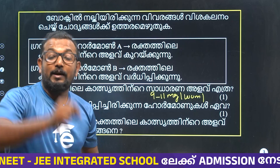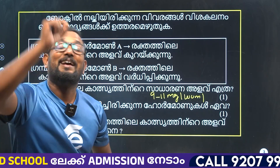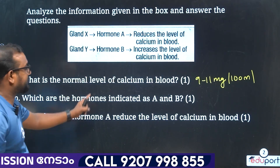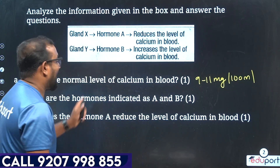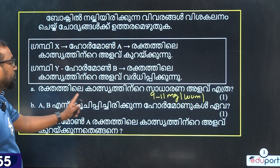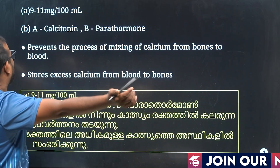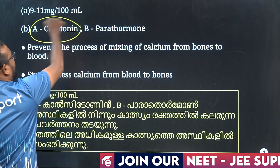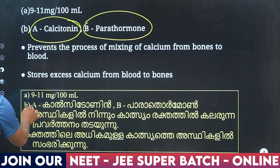11 milligram per 100 ml — and calcium is 15. Which are the hormones indicated A and B? That is A — B, what is the hormone? That is what I said — that is the symbol. Item A is calcium.